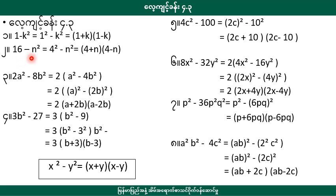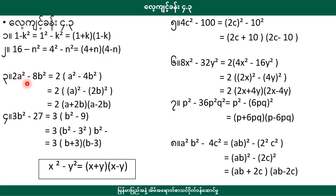16 minus n squared is equal to 64 squared minus n squared, and n squared will be equal to the result. Number 2: b squared minus 2 squared. I believe that will be equal to beta in x squared.